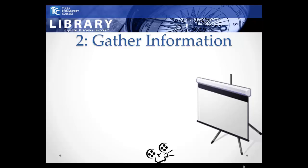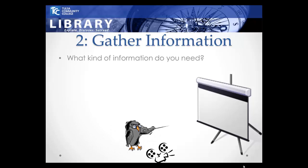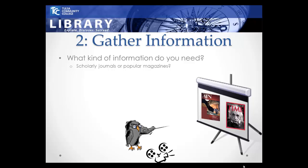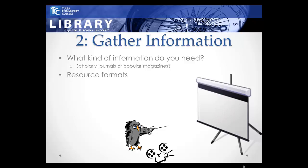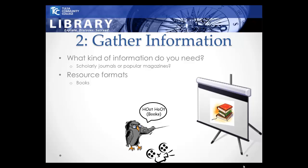Step 2: Gather Information. There are a couple of key ideas to keep in mind as you gather your information. The amount you need depends on your information requirements — what kind do you need? Do you need scholarly journals, or can you use popular magazines? There are a number of places to look in both print and electronic formats. For books, you may carry out either a keyword or subject search in the TCC catalog to find books, e-books, and print periodicals.